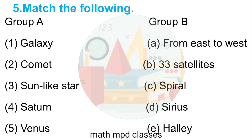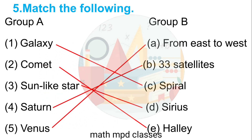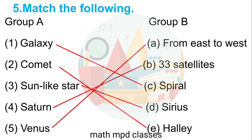Question No. 5. Match the following — Group A and Group B. Galaxy: Spiral. Comet: Hale. Sun-like star: Ceres. Saturn: 33 satellites. Venus: From east to west. In this way, we have completed the question answer of Chapter No. 16, The Universe. Dear students, if you like my video, please like, share, and subscribe. Thank you.